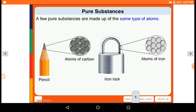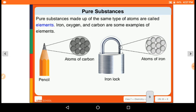A few pure substances are made up of the same type of atoms. For example, pencil contains atoms of carbon and iron lock contains atoms of iron. Substances made up of the same type of atom are called elements. Iron, oxygen, and carbon are some examples of elements.